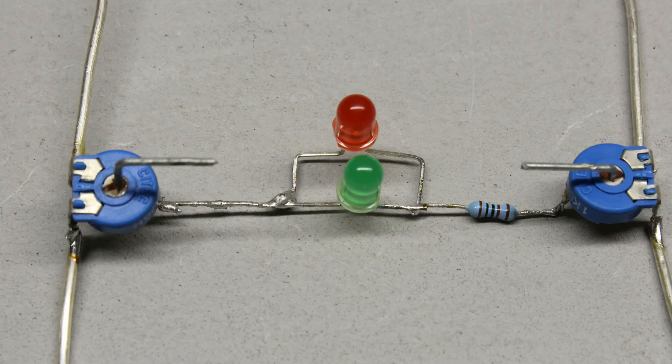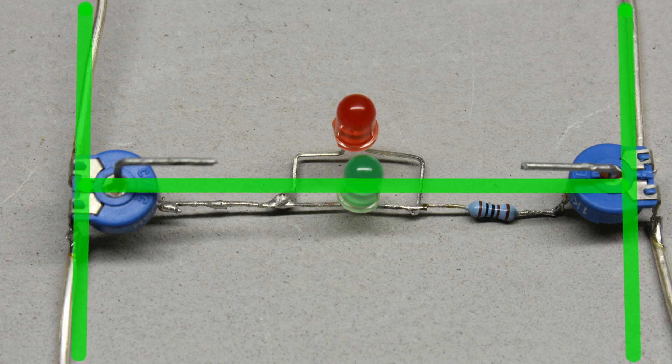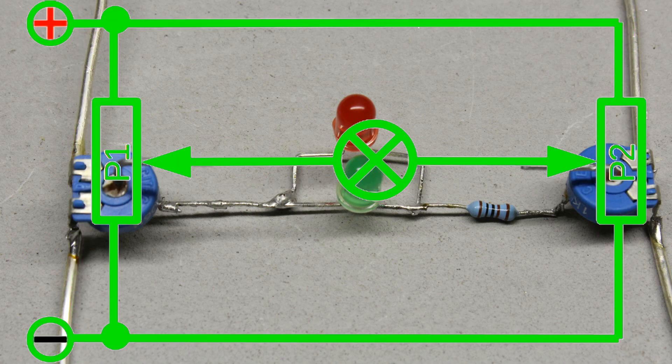An H-bridge is an electronic circuit that enables a voltage to be applied across a load in either direction. A very simple H-bridge consists of two voltage dividers. Here, two potentiometers are used with the load connected at the two sliding contacts.